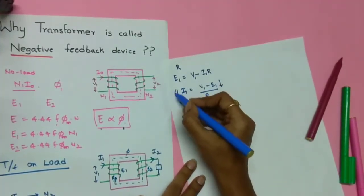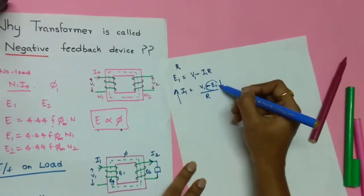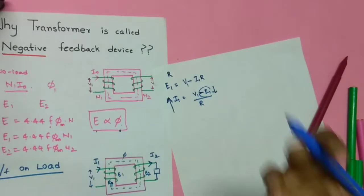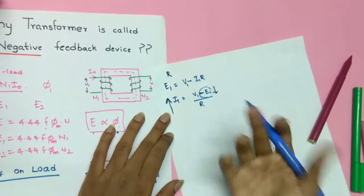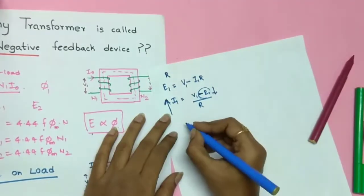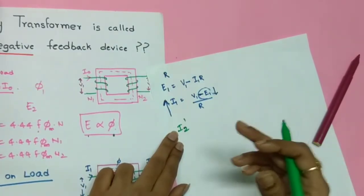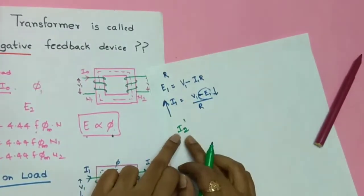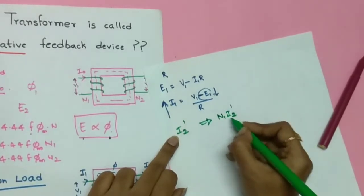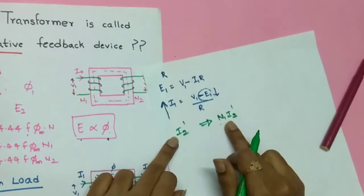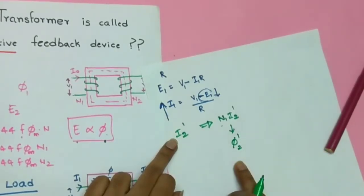Due to the reduction in flux, e1 is reducing. Because e1 appears with a negative sign in the formula for i1, as e1 decreases, the primary current i1 starts increasing — there is an excess current in the primary winding. Due to this excess current, an excess MMF is produced in the primary. Let's call this excess current i2'. Since it arises in response to the secondary current i2, we denote it i2', and it produces an excess MMF of N1·i2' in the primary.